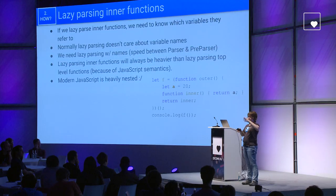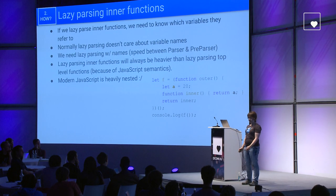Normally, lazy parsing doesn't care about variable names, but now we need to — we need something like lazy parsing with names. The speed for doing that is somewhere between parser and preparser. This means lazy parsing inner functions will always be heavier than lazy parsing top-level functions because of these semantics. Modern JavaScript is heavily nested — everything is wrapped in IIFE functions, everything is a module now — so this is a price you pay for nesting functions.